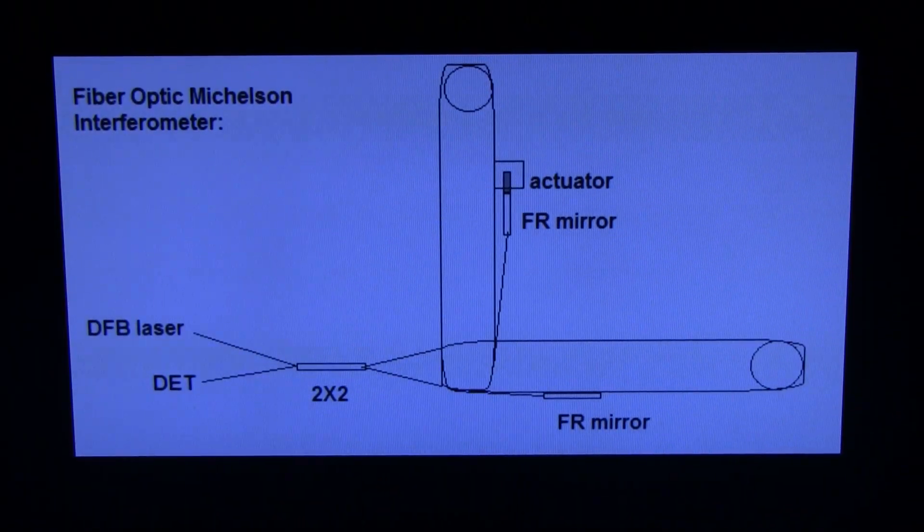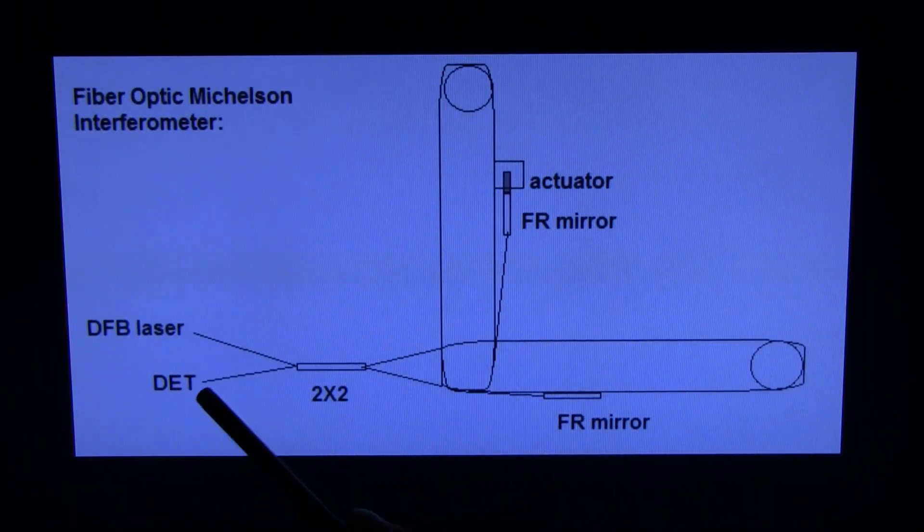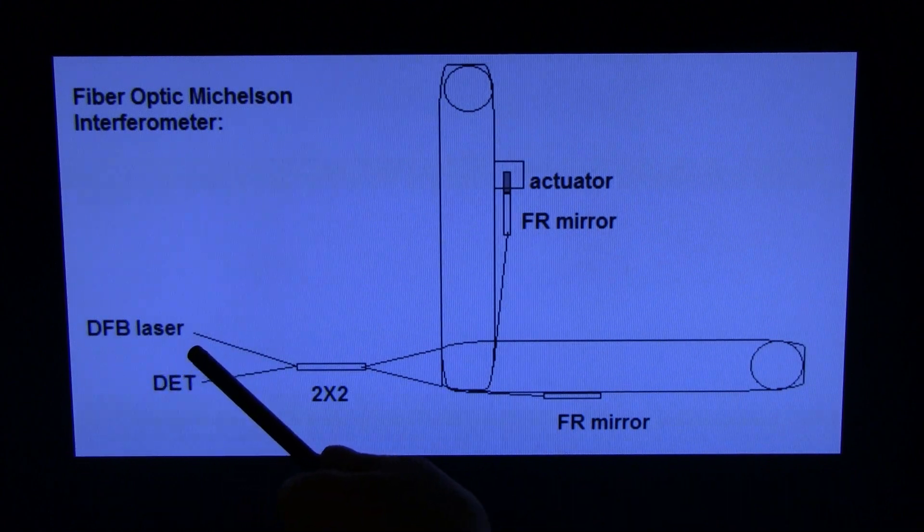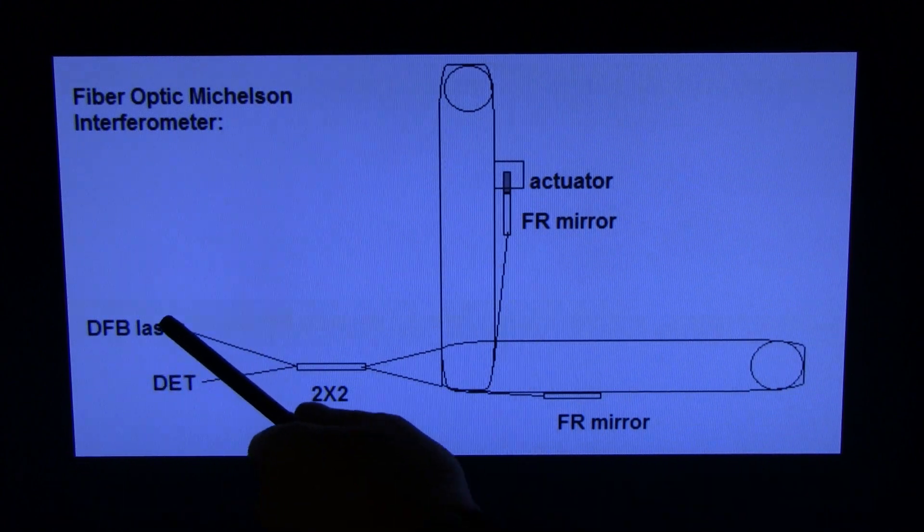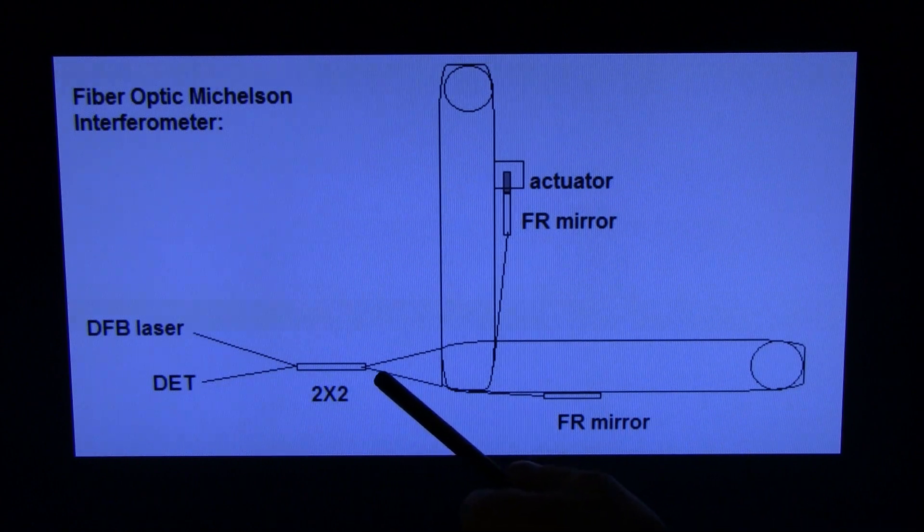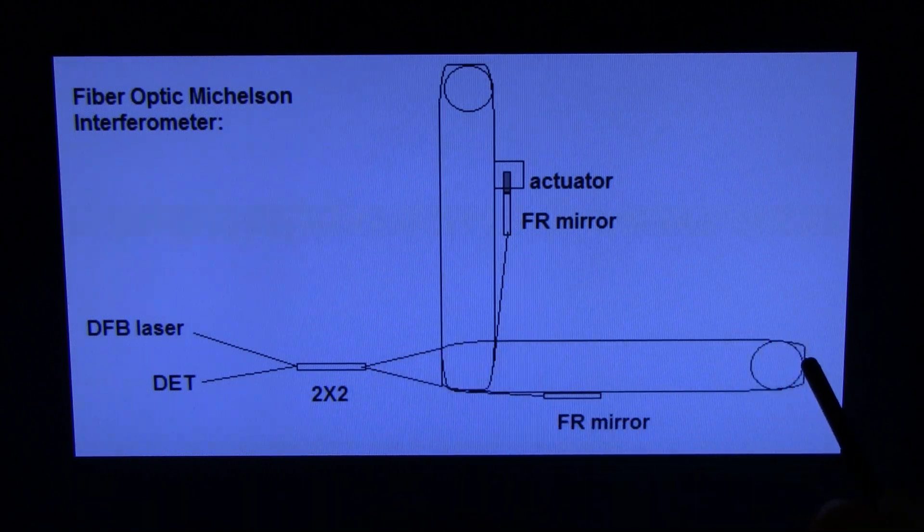So, here's a schematic of the interferometer we're going to be building. We're starting off with a DFB laser at 1310 nanometers, approximately. The light from this laser is going to pass through our 2x2 coupler, then it's going to head down this optical path.